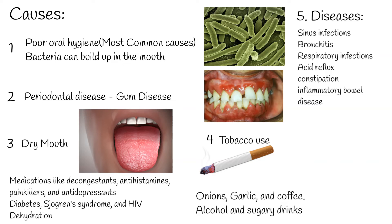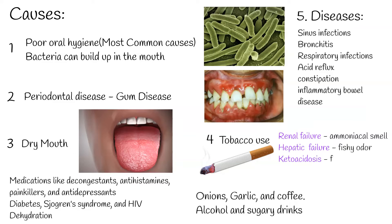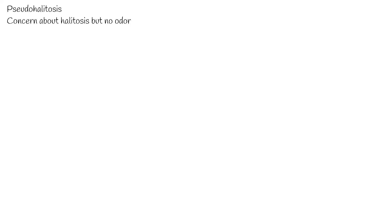Several systemic diseases produce distinctive odors — for example, renal failure produces an ammoniacal smell, hepatic failure produces a fishy odor, and ketoacidosis produces a fruity odor. Helicobacter pylori gastritis can also produce ammoniacal breath. If a person presents with concern about halitosis but no odor is detectable, then pseudohalitosis or halitophobia must be considered.